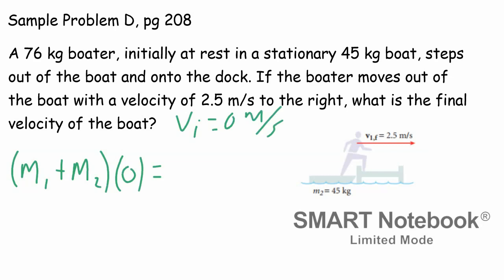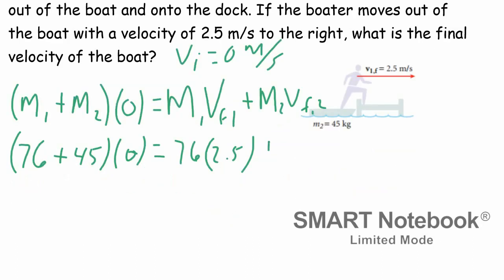At the end we'll say m1 is the person. We can even label that differently. We can call it mp for person and m2 mb for boat. So let's say the person m1 times their final speed one plus the mass of the boat m2 times the final speed of the boat. Now it's just a matter of plugging numbers in. The mass of the person was 76. The mass of the boat is 45. And that's going to be multiplied by zero. So that whole left side is zero. m1 is the person. So the mass of the person is 76 times two and a half. And then we got the mass of the boat which has a mass of 45. And I need to find the final speed of two.